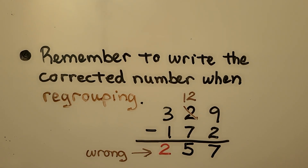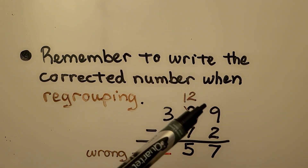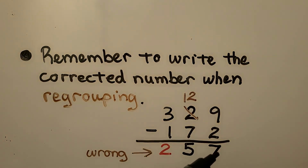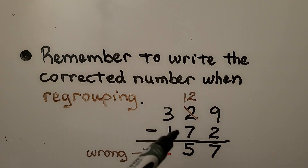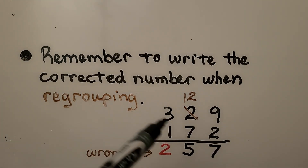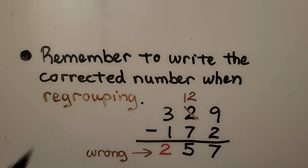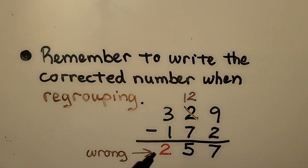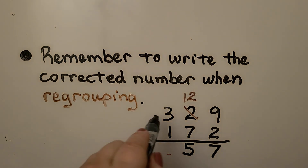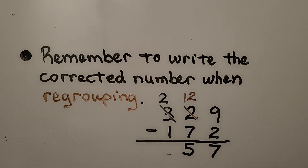Remember to write the corrected number when regrouping. We have nine, we're taking away two — that's seven. But here we had two tens and we were taking away seven tens and we didn't have enough, so we changed the two tens to twelve tens. But we forgot to cross off the hundreds, giving that one hundred to the tens place as ten tens. So because we forgot to cross off this three and make it a two, when we went to do the subtraction, we did three minus one which is two — and that's wrong. This should have been crossed off, and the three hundreds became a two hundreds. So when we did the subtraction, we have two hundreds minus one hundred, which is one hundred.